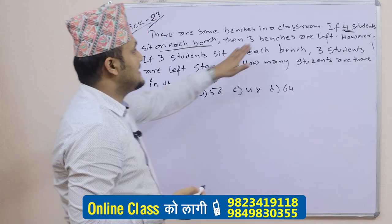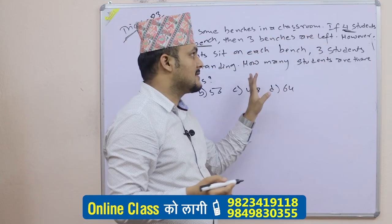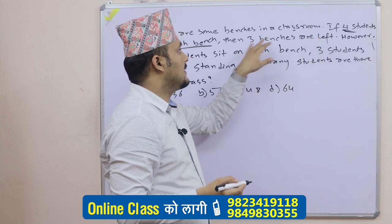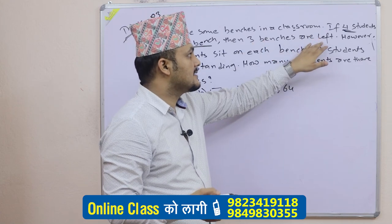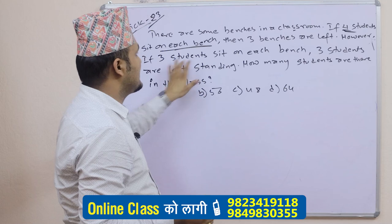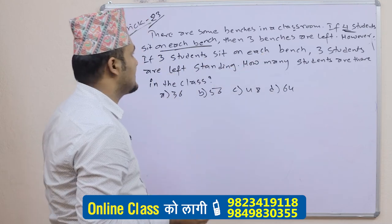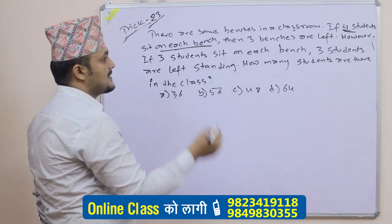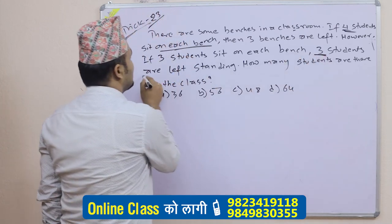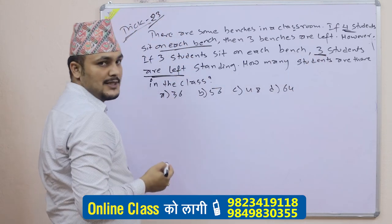However, if 3 students sit on each bench, then 3 students are left standing — that is, 3 students do not have a seat.